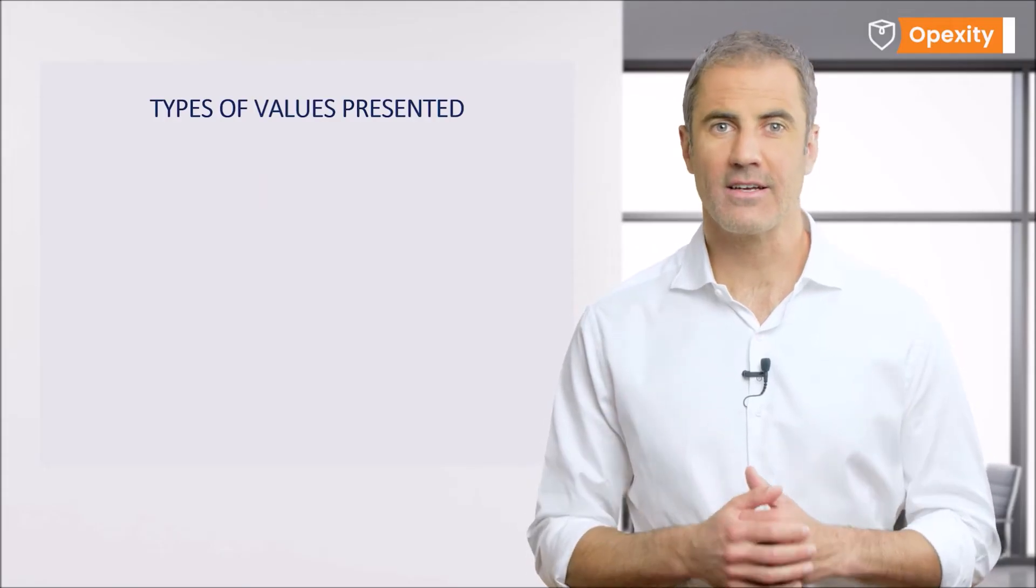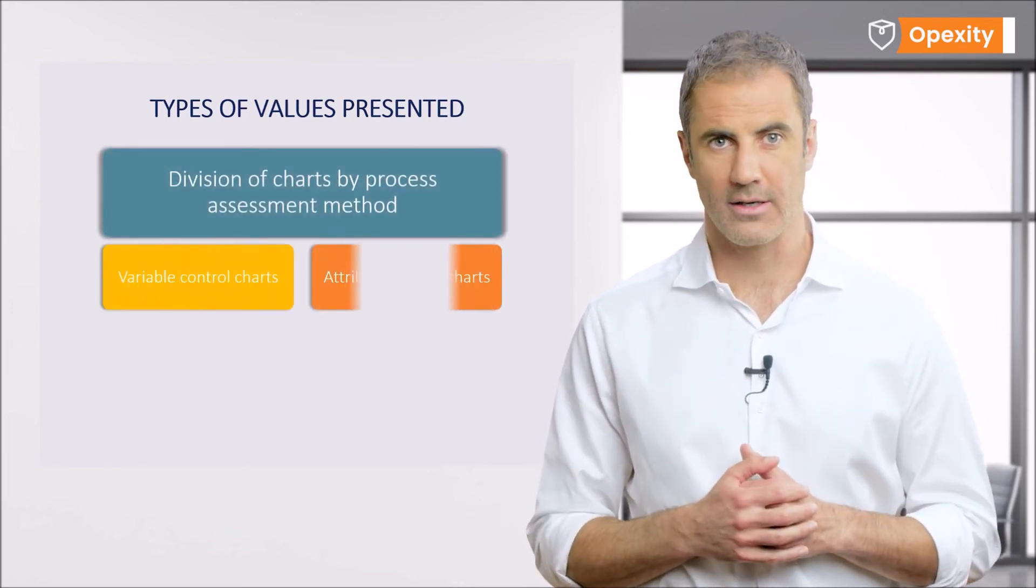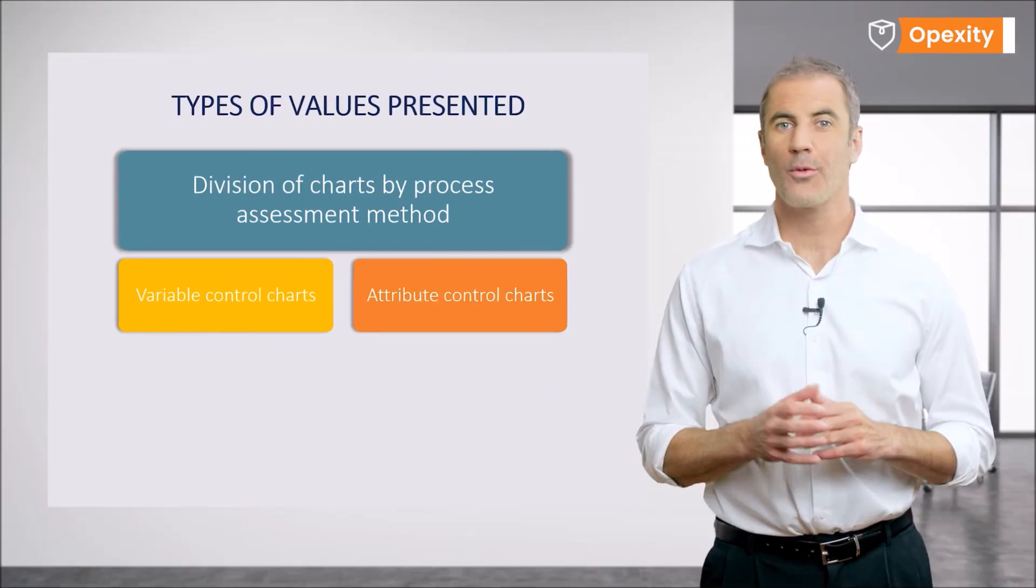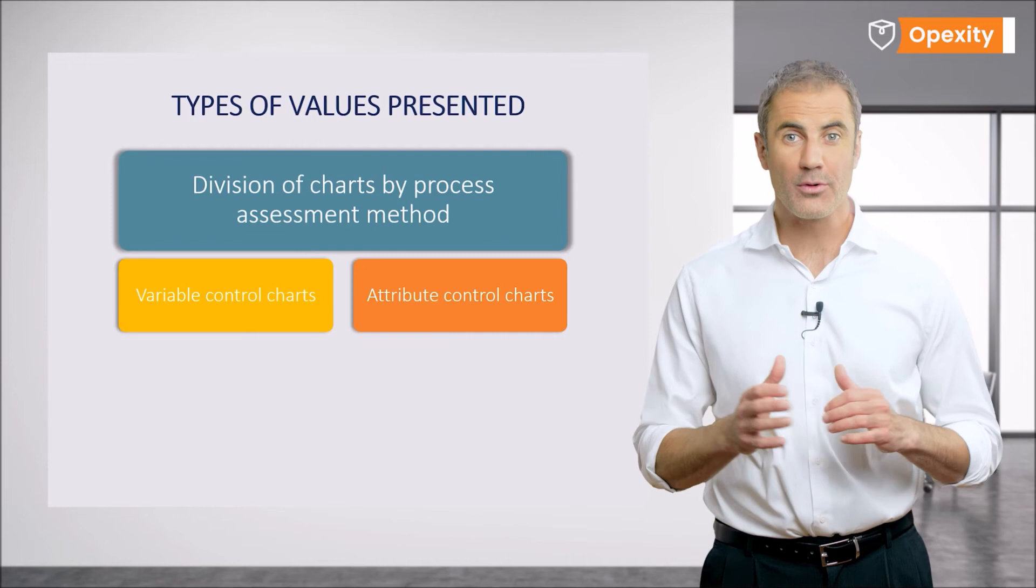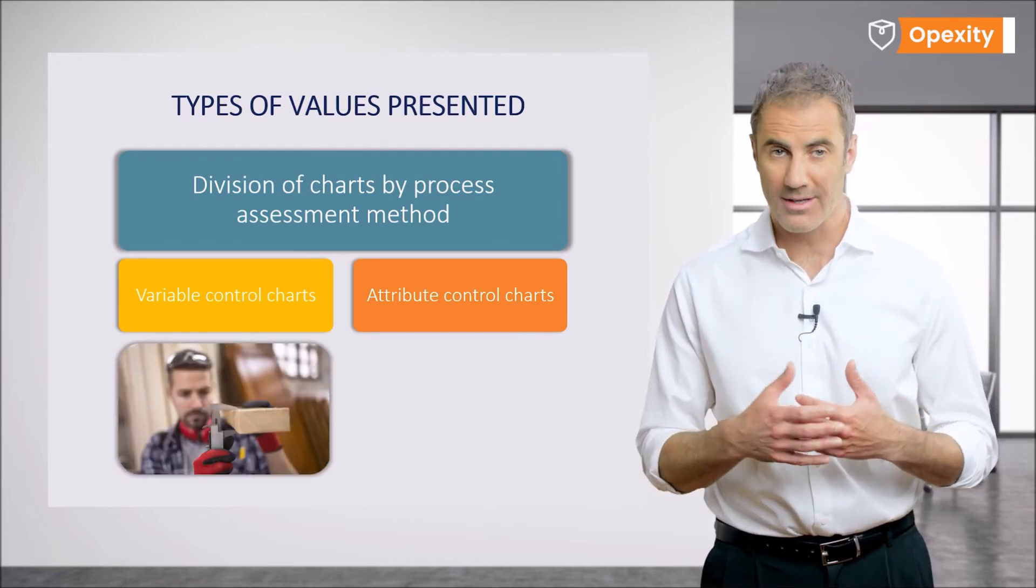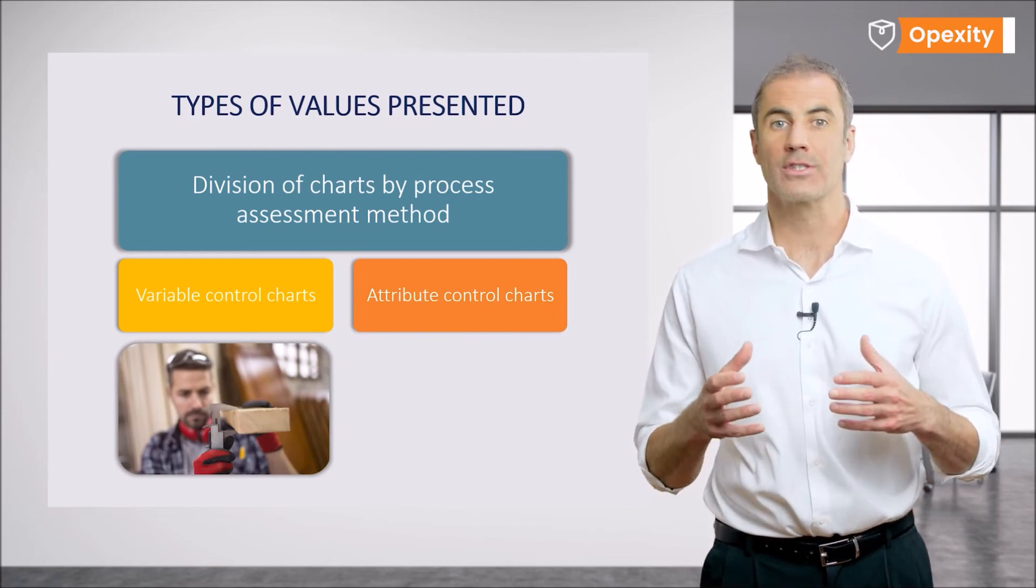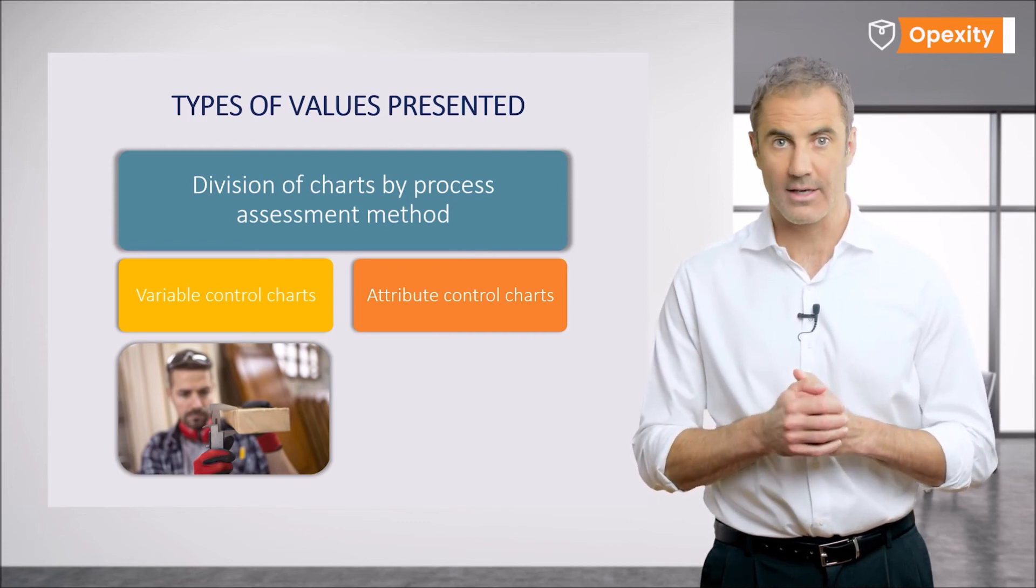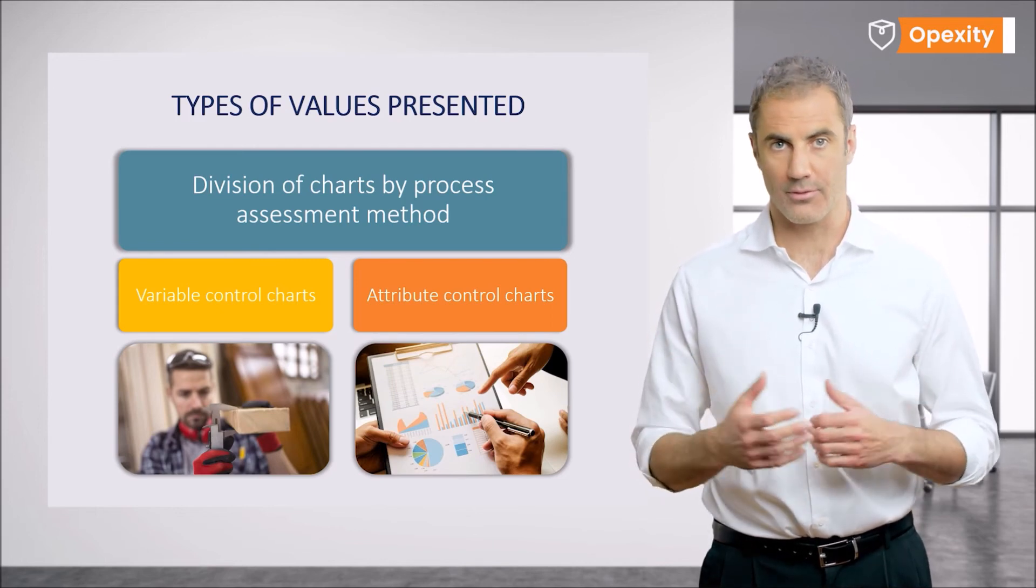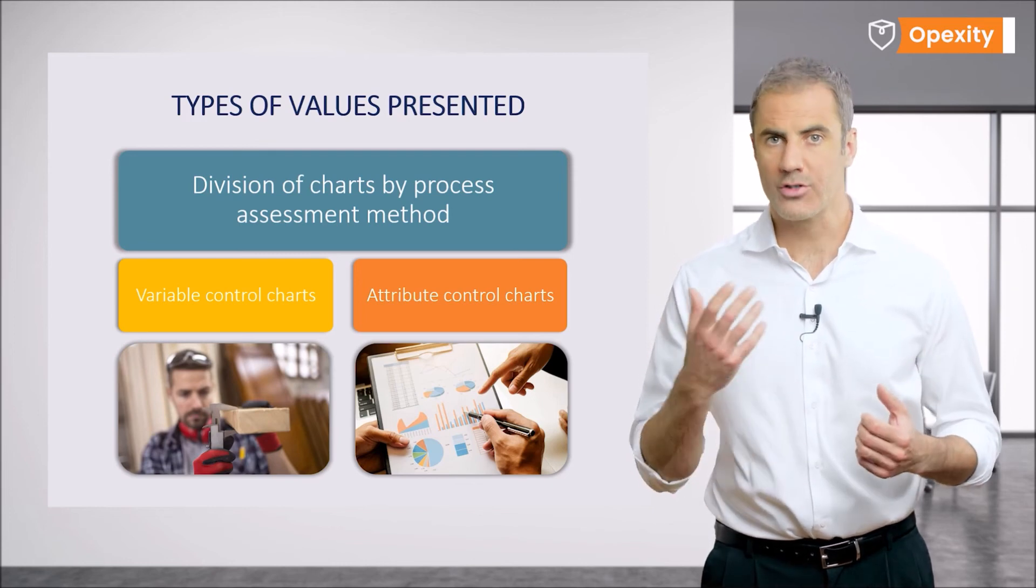As previously stated, the characteristic of a product or process examined affects the selection of the type of control chart. In other words, the way we evaluate the process. We will have two types of control charts. Variable control charts, where we obtain a numerical result directly from the measurement of the sample, for example the length of an item, and attributable control charts, where we obtain a result other than the numerical measurement result. For example, we will be interested in the percentage of non-compliance in a sample. To put it simpler, there will be two types of control charts, variable and attributable.